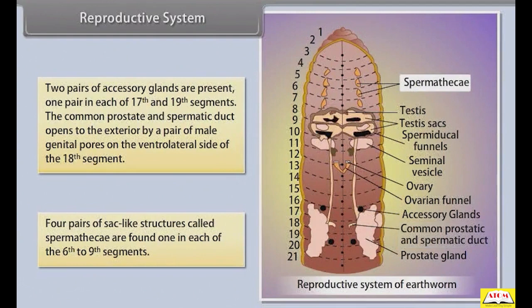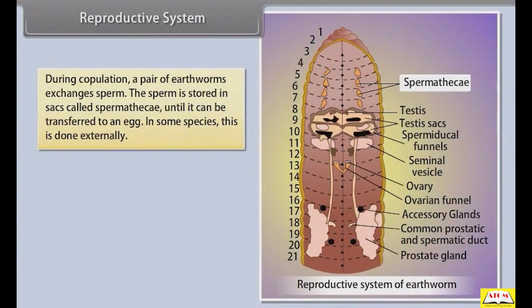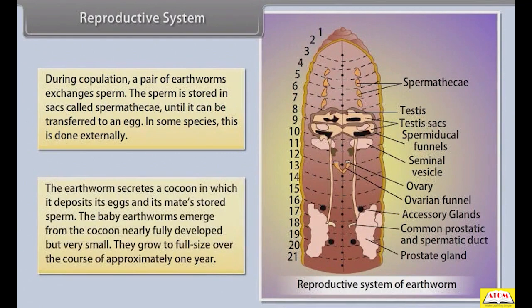Four pairs of sac-like structures called spermathecae are found, one in each of the 6th to 9th segments. During copulation, a pair of earthworms exchanges sperm, which is stored in spermathecae until transferred to an egg. The earthworm secretes a cocoon in which it deposits its eggs and its mate's stored sperm. The baby earthworms emerge from the cocoon nearly fully developed but very small, growing to full size over approximately one year.